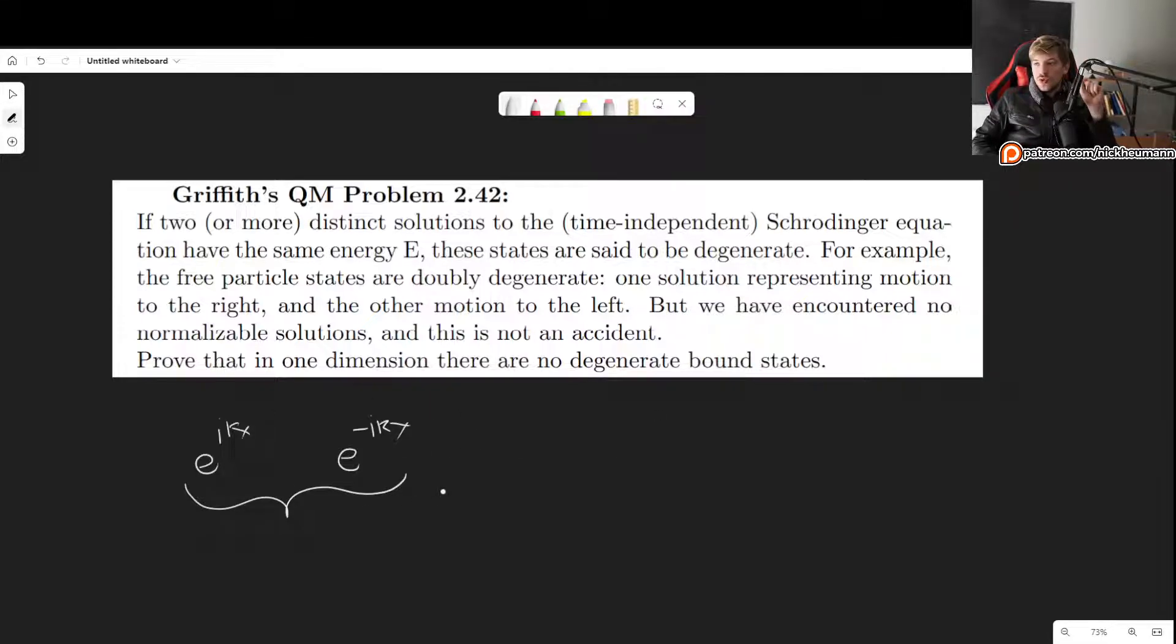However, we have found no normalizable solutions that are degenerate. This is the free particle which was not normalizable. So we have found no normalizable solutions that are degenerate, and this is not an accident. So we want to prove that in one dimension there are no degenerate bound states.